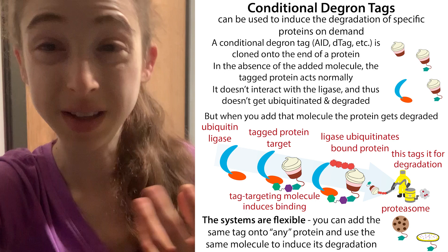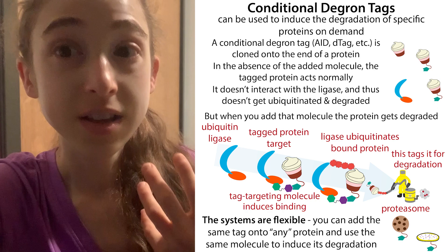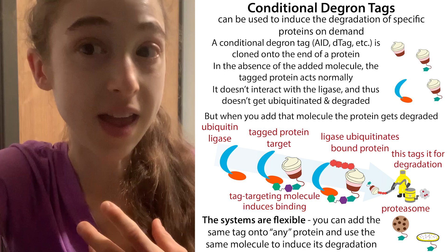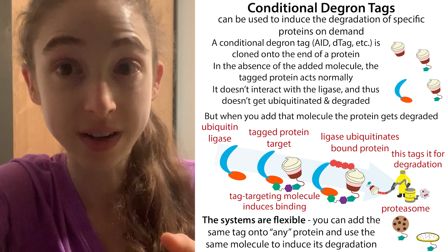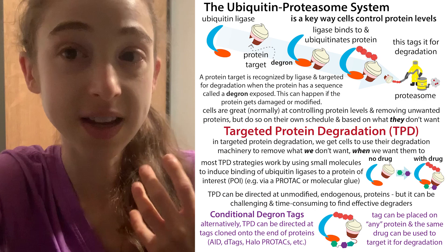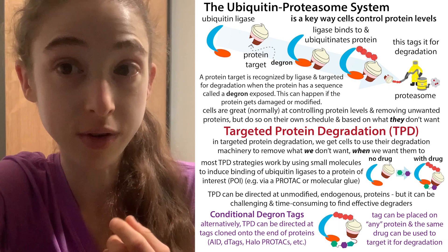How do you get rid of proteins on demand? One way is a conditional degron tag, something like a D-tag, an oxygen-inducible degron, or a HaloProTAC. These are ways we can stick a little extra sequence onto the end of a protein and then add a chemical. That chemical interacts with the sequence you put on and gets your protein ubiquitinated, tagging it for destruction via the cellular machinery called the proteasome. This takes advantage of the cell's natural protein disposal machinery — the ubiquitin-proteasome system.